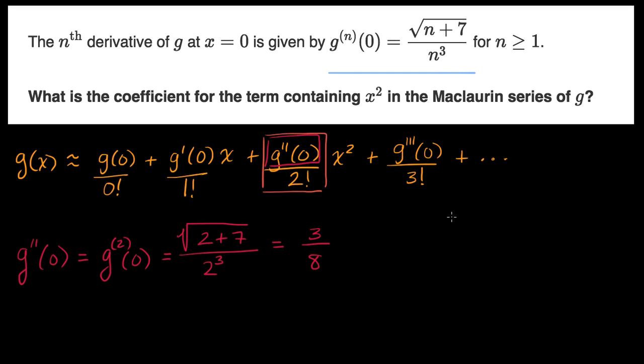So this part right over here is three eighths, so the whole coefficient is going to be three eighths, that's this numerator, divided by two, which of course is equal to three over sixteen, and we're done.